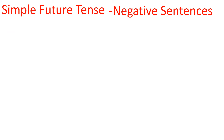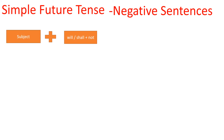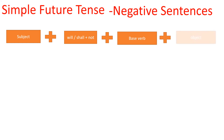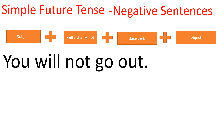Now let's move to negative sentences in simple future tense. For negative sentences, we have to make some changes in the structure. The structure is: subject plus will or shall plus not plus base verb plus object. We have to use not with the helping verb will or shall.